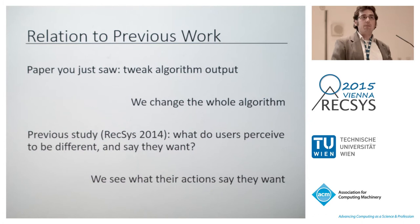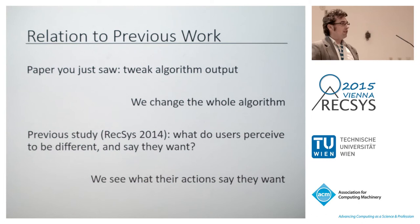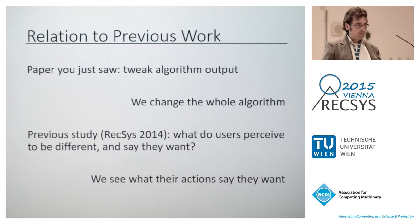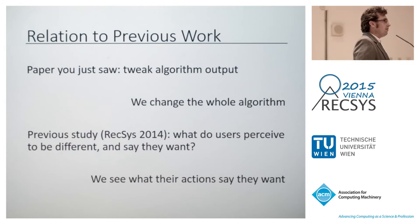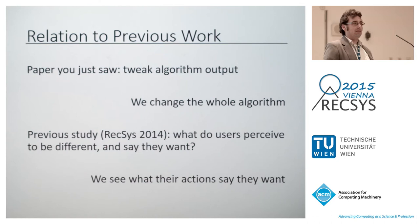Relating this to previous work: the paper Max just presented looked at tweaking algorithm output — applying additional layers to reorder results with popularity or age. We're changing the whole algorithm. The two works could be combined by swapping out the base algorithm and then applying tweaks on top. We also had a paper at Rexis where we asked users what differences they perceive and what algorithms they want — that looked at what users say they want. This work looks at what users' actions say they want.